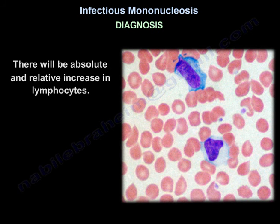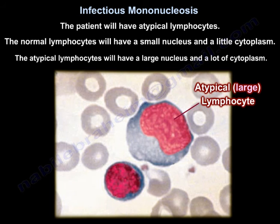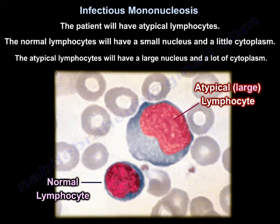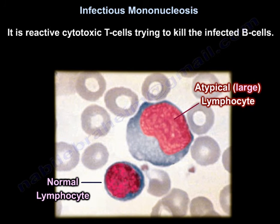There will be an absolute and relative increase in lymphocytes, and the patient will have atypical lymphocytes. Normal lymphocytes have a small nucleus and little cytoplasm, but these atypical forms are reactive cytotoxic T cells trying to kill the infected B cells.